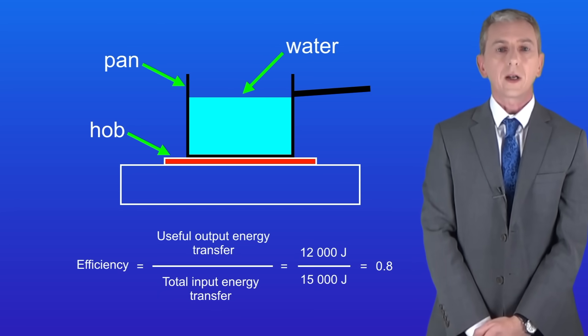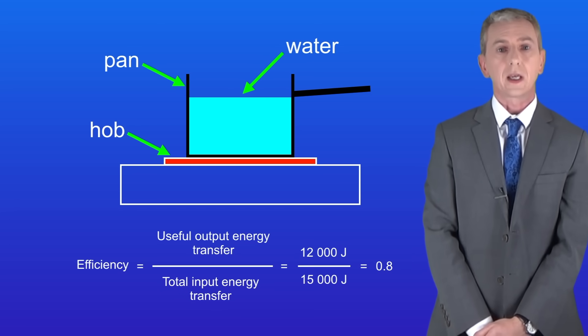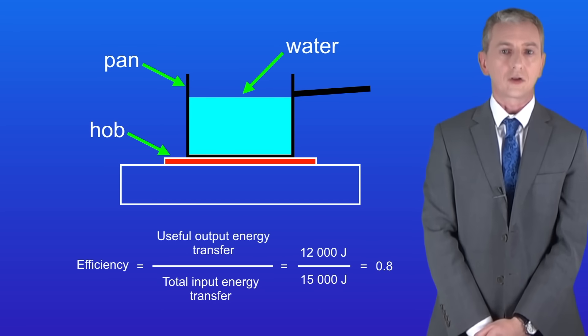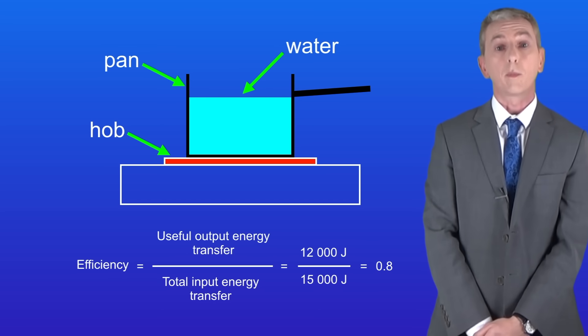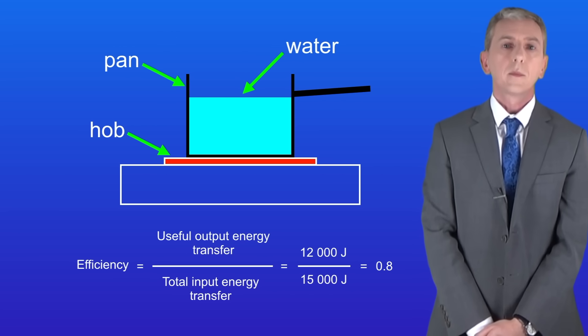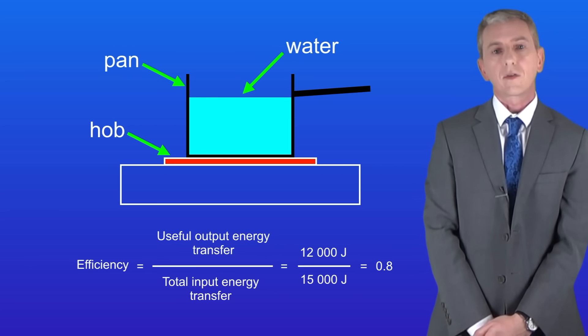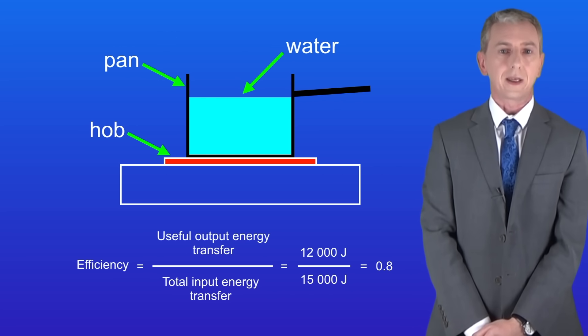So the useful output energy transfer in this case is 12,000 joules of thermal energy passing into the water. The total input energy transfer is 15,000 joules of thermal energy from the hob. Putting these numbers into the equation gives an efficiency of 0.8.